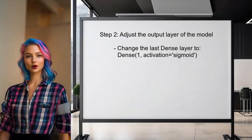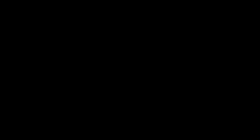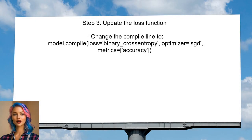Next, verify the output layer of the model. The last dense layer should have two units for binary classification, but it should use the sigmoid activation function instead of softmax. Additionally, update the loss function in the model compilation — for binary classification, the loss function should be binary cross-entropy instead of mean squared error.